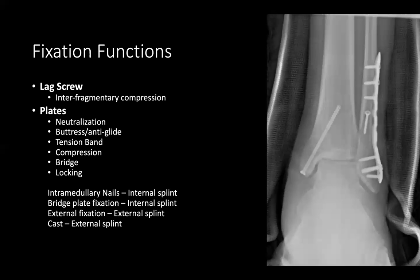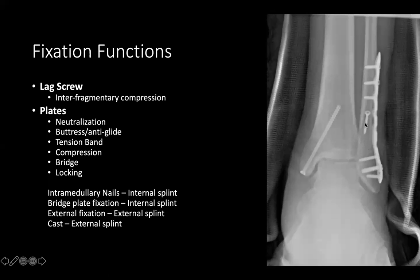Looking at two independent screws — one in the tibia going from the medial malleolus and one in the fibula — those are examples of lag screws, holding fragments together as close to perpendicular as possible. The lateral fibular plate is a neutralization plate. The small fibular lag screw is fully threaded, compared to the cannulated screw in the medial malleolus, which has a hollow center and blunt tip, requiring a guide wire. Screws in the plate with tips are solid screws.